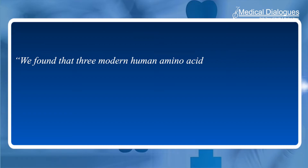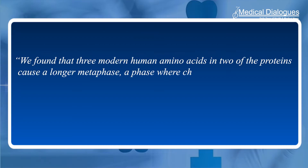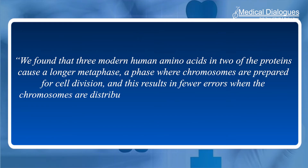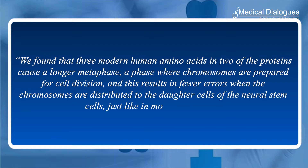We found that three modern human amino acids in two of the proteins cause a longer metaphase — a phase where chromosomes are prepared for cell division — and this results in fewer errors when the chromosomes are distributed to the daughter cells of the neural stem cells, just like in modern humans.